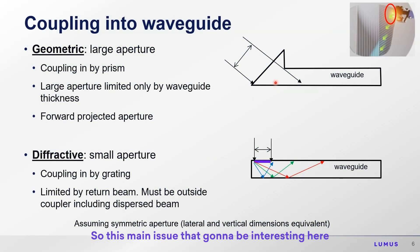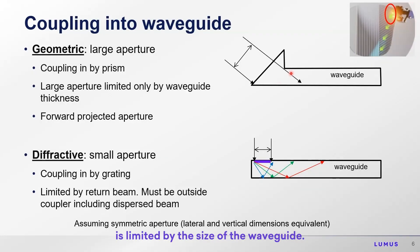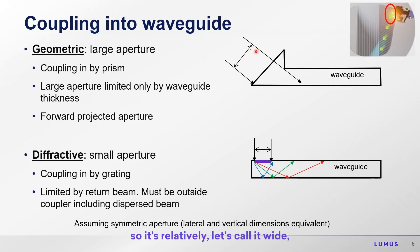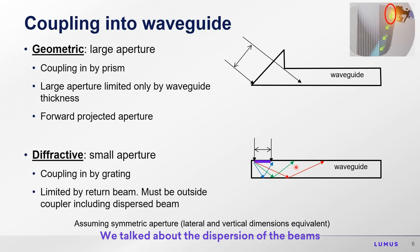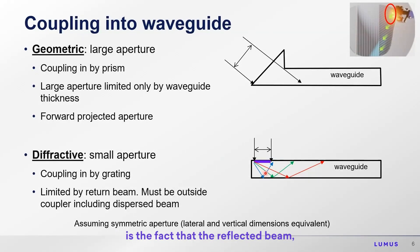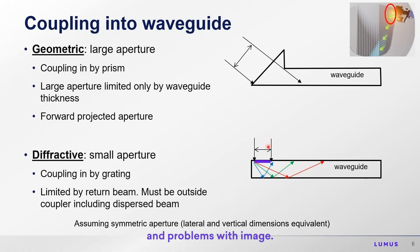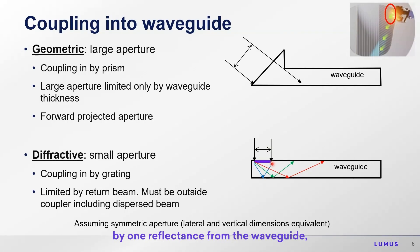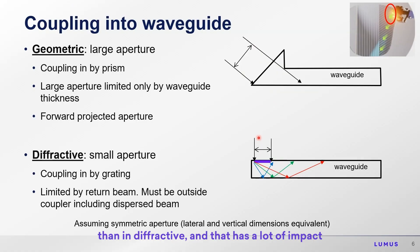The main issue is that coupling into a geometric waveguide is limited by the size of the waveguide — the wider it is, the more you can project in. For comparison, in diffractive waveguides, the aperture of the coupling is limited by the fact that the reflected beam must not hit the input coupler, because then it will couple back out and create scattering problems with the image. So the aperture in geometric is much larger than in diffractive, and that has a lot of impact on the whole system.